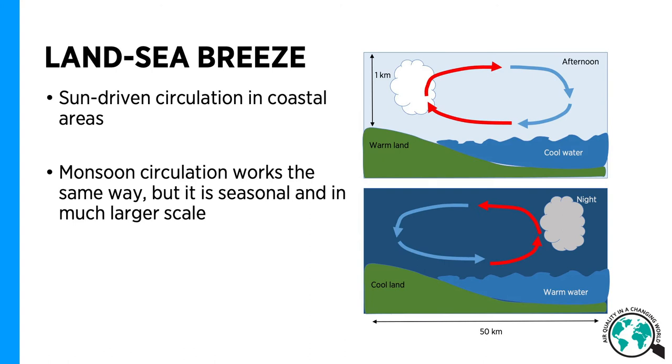In coastal areas, this convection mechanism often forms a pattern called land-sea breeze. In daytime, when sun warms the land areas, convection is formed over land and compensating flow over the cooler water surface.